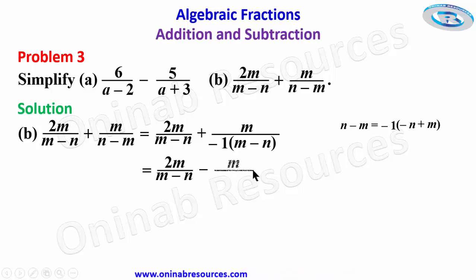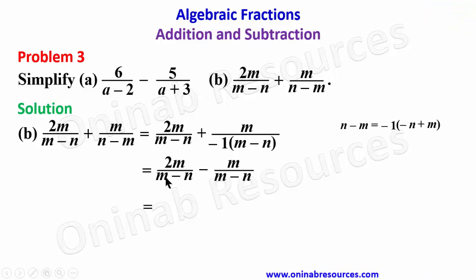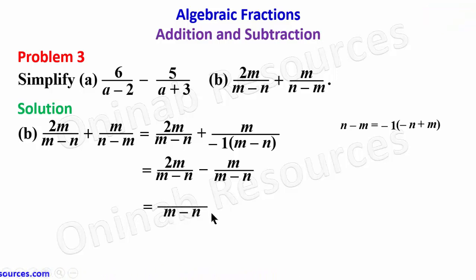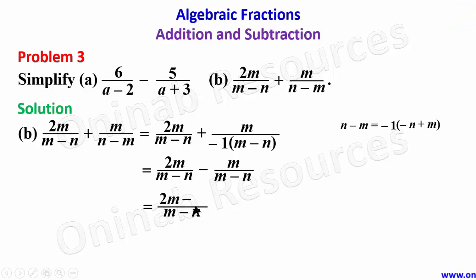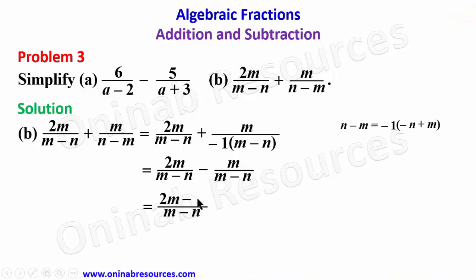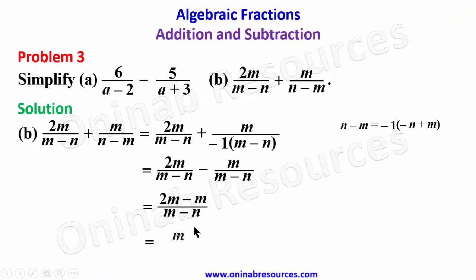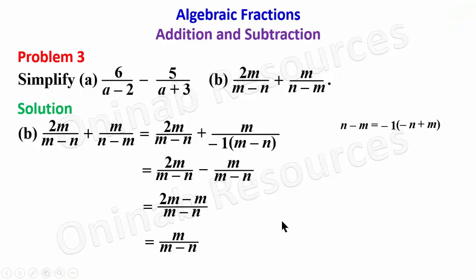So we now have 2m over (m minus n) minus m over (m minus n). The LCM of the denominators is just (m minus n). (m minus n) divided by (m minus n) gives 1; 1 times 2m gives 2m. Minus (m minus n) divided by (m minus n) gives 1; 1 times m gives m. So 2m minus m gives m over (m minus n). That's the end of the solution to problem 3b and the entire problem 3.